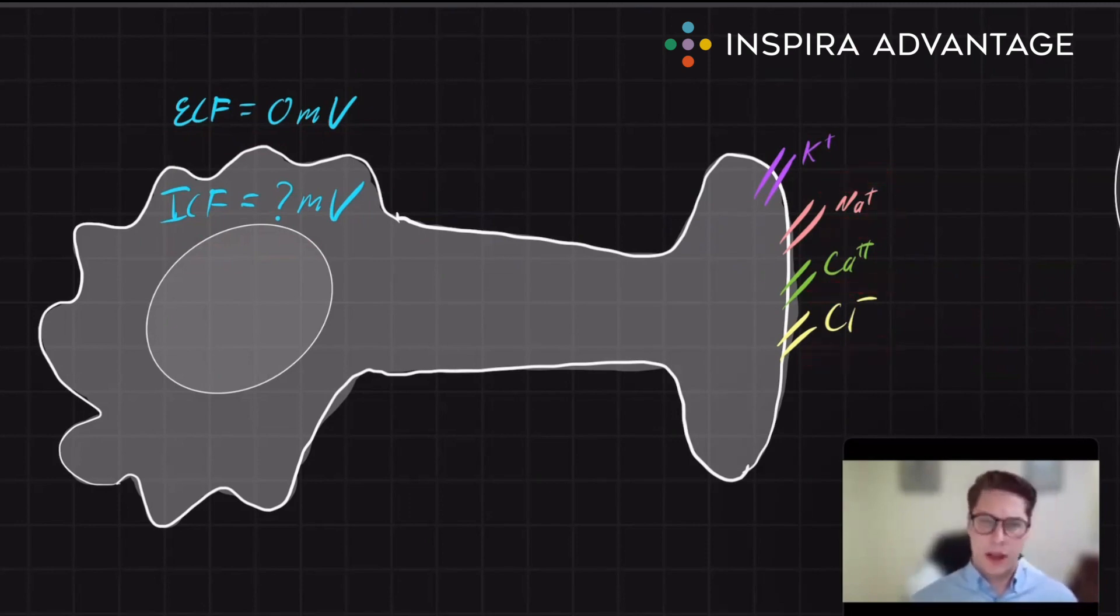To understand the resting membrane potential, as well as how neurons fire in an action potential, we have to first know the relative concentration of these ions. In other words, is there more of ion X inside or outside of the cell?